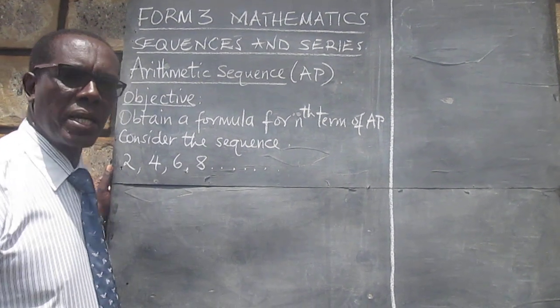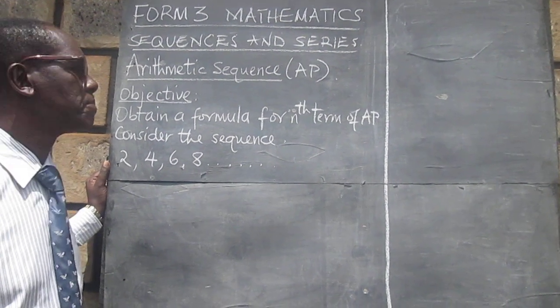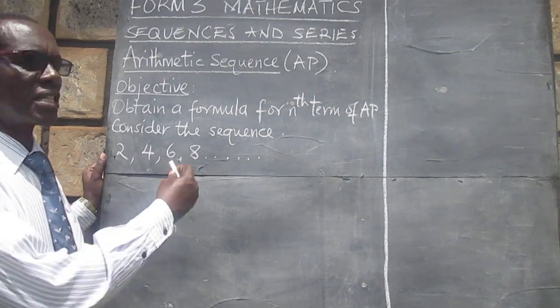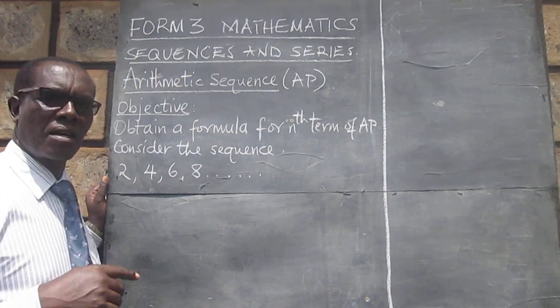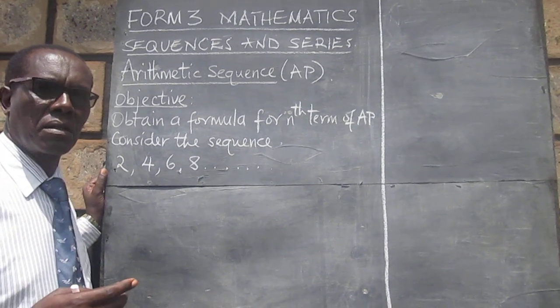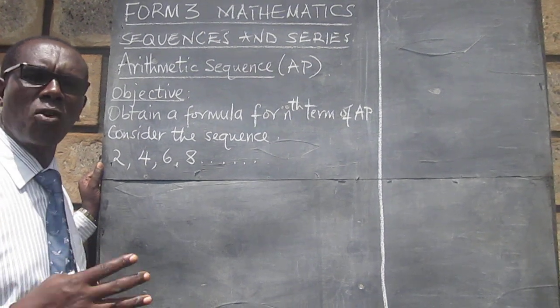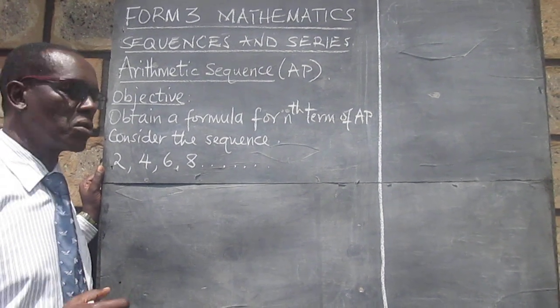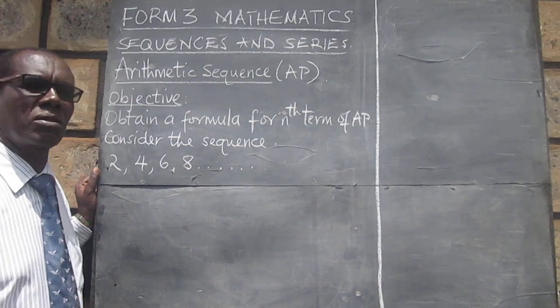We will start with AP, or what is also called arithmetic sequence. The objective for today is to obtain a formula for the nth term of an AP. That is any term. If we want to get the 5th term, 6th term, 10th, or any term, we would like to arrive at a formula which we can apply straight away to get that.